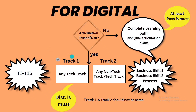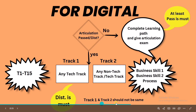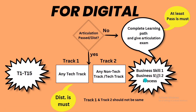In Track 2, you have both options — either a tech track or a non-tech track — but Track 1 and Track 2 should not be the same. If you are selecting a non-tech track, you can go with Business Skill or Business Skill 2. Process articulation won't appear here because articulation is a prerequisite. Once you complete the learning path and click 'Yes' for the articulation exam in the survey form, you will automatically get the quality. That covers the digital part.